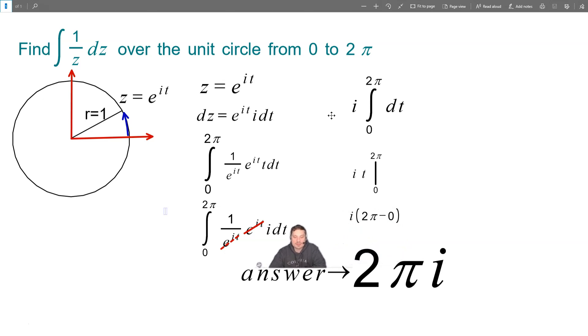So lastly, I clean it up a little bit so that the answer is 2 pi i, and that then we can say is the value of 1 over z integrated over this entire circle. And that is it. Thanks so much. Please give a like and subscribe. I'll see you in another video. Bye-bye.